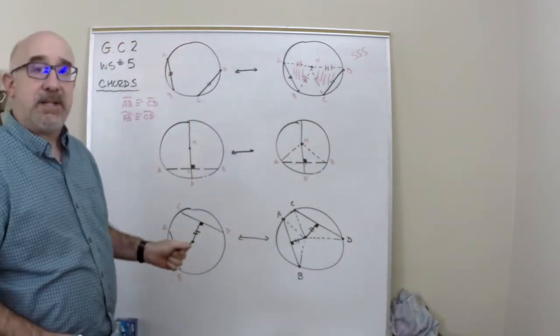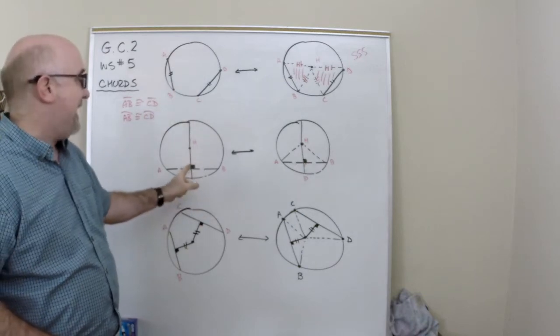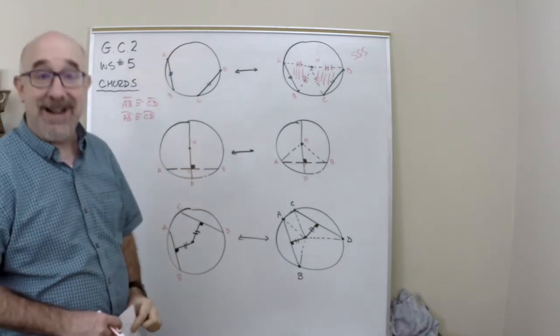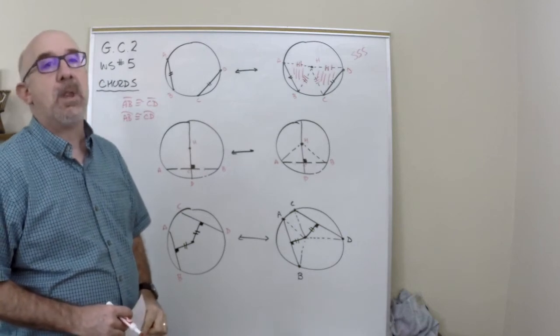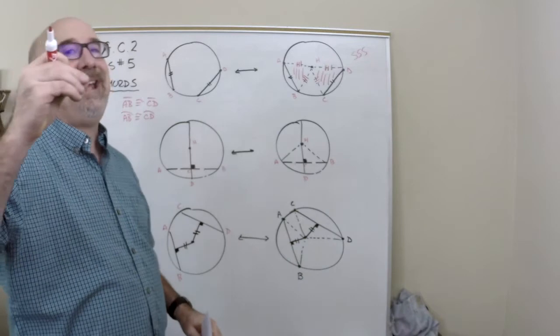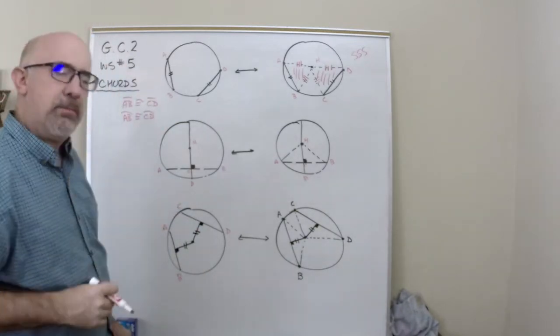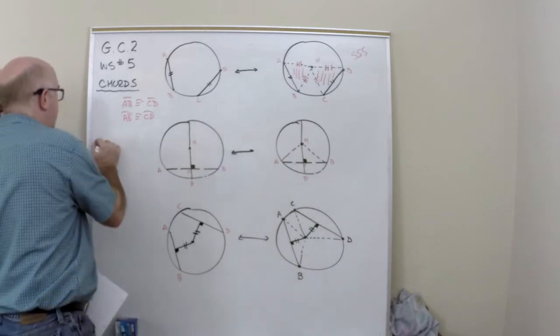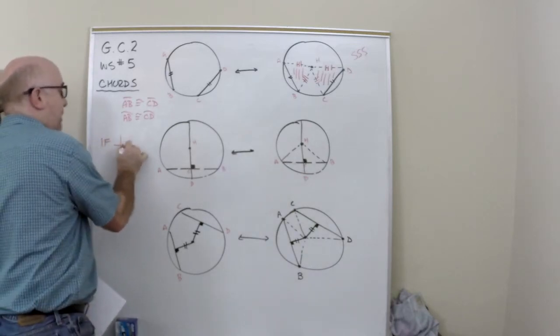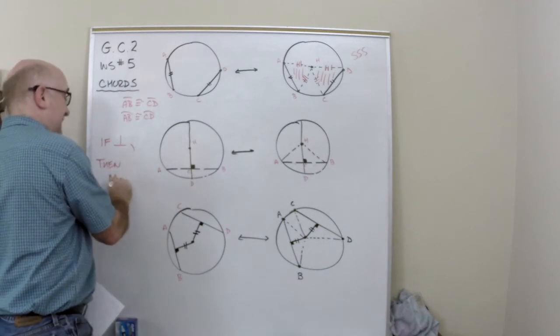What this basically says is if a diameter or a radius hit at 90 degrees, we're then to know that it hits at exactly the midpoint. So if it hits perpendicular, then we find out it's the midpoint.